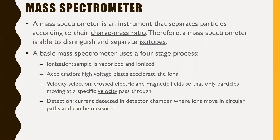The first stage is ionization — the sample is vaporized and ionized, meaning it's given a charge. Next, it's accelerated using high voltage plates. Then there's velocity selection: this is the most complicated part, and it happens by crossing electric and magnetic fields so that only particles moving at a specific velocity pass through. If particles go too slow or too fast, they deflect to one side. Finally, there's the detection phase, where the current detected in the detector chamber measures ions moving in circular paths.